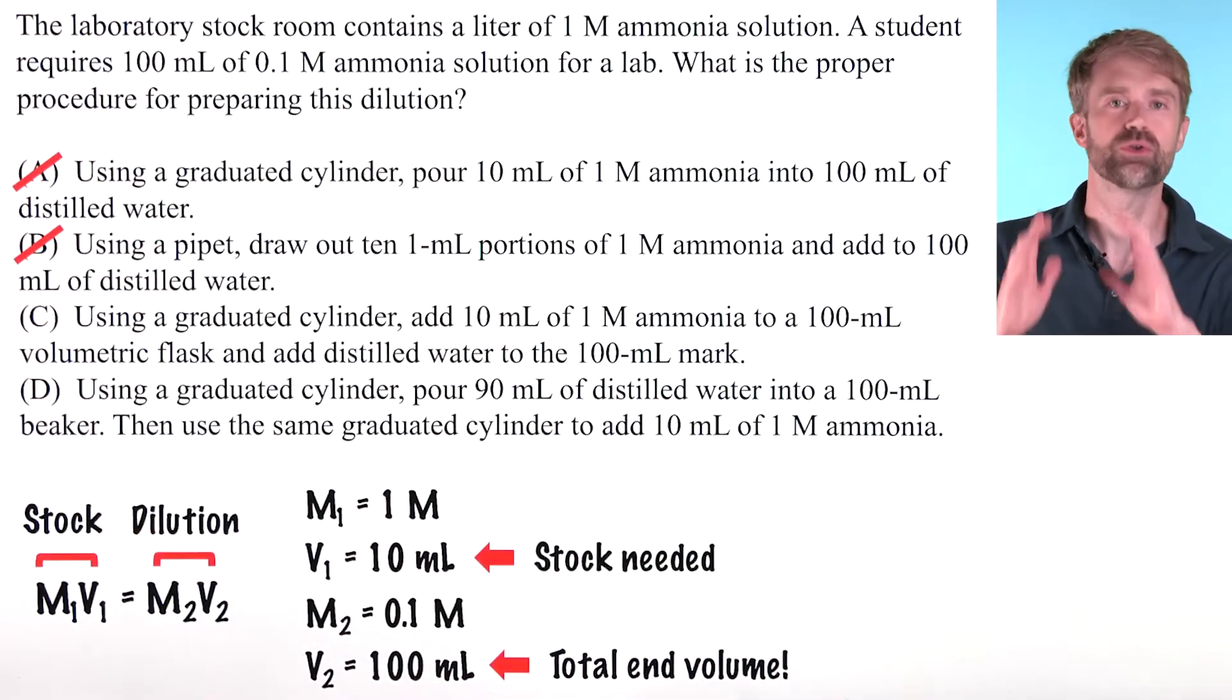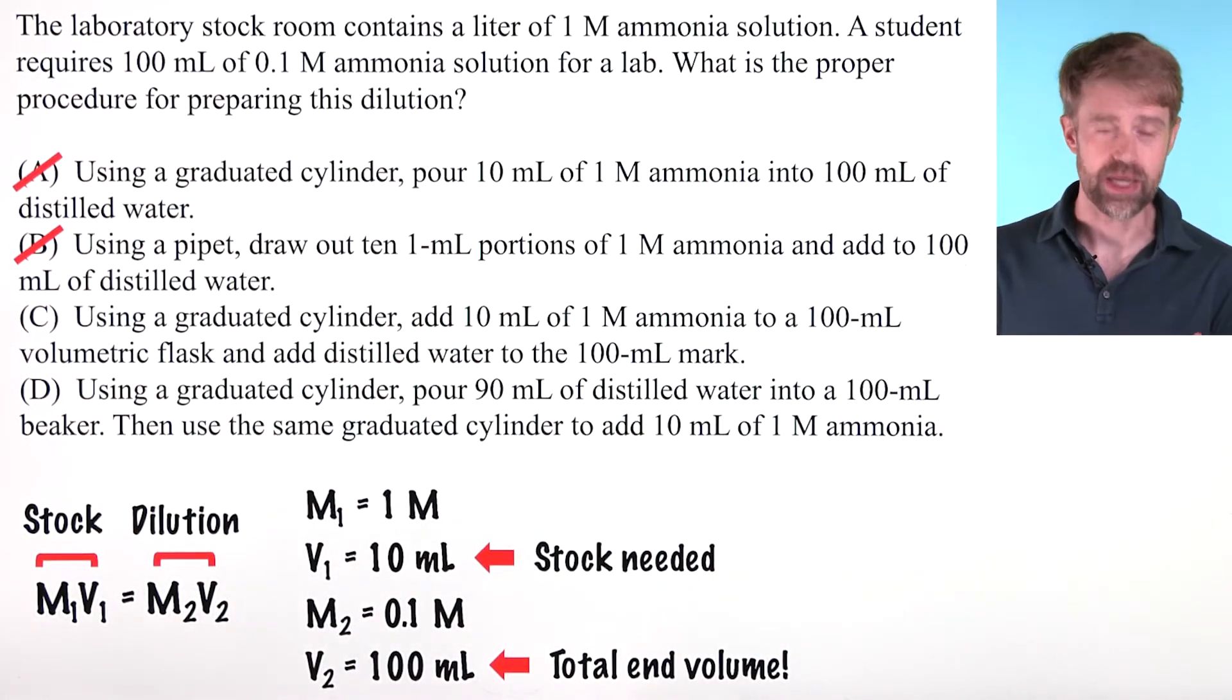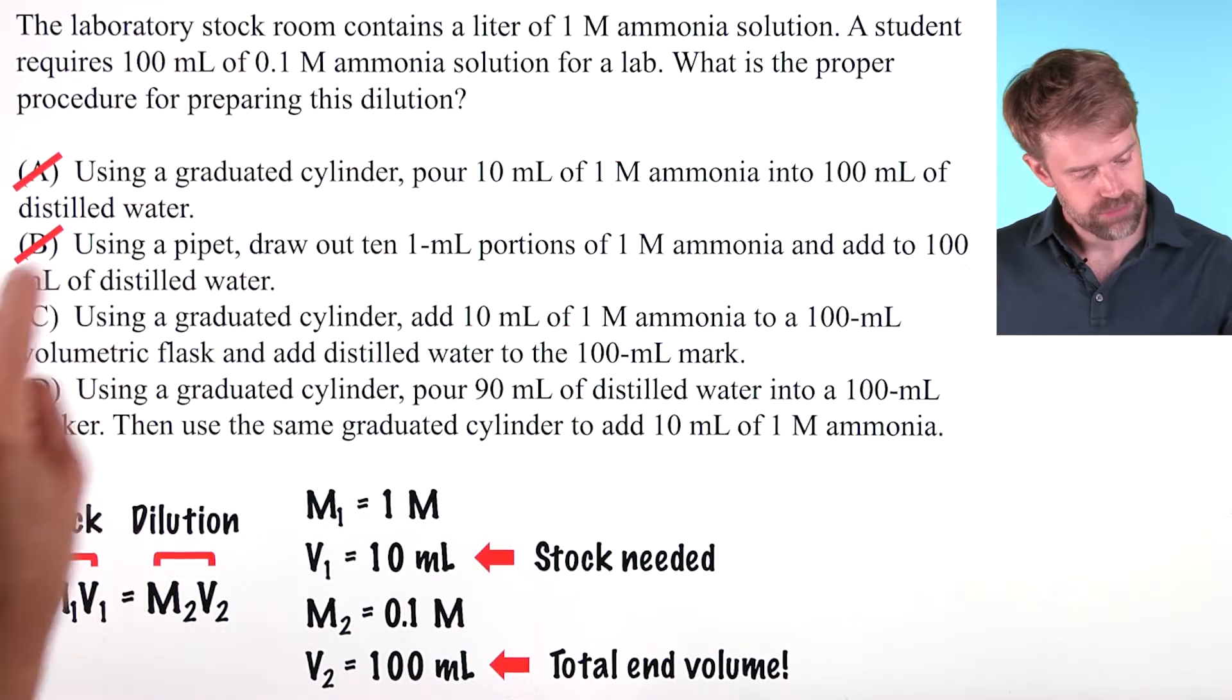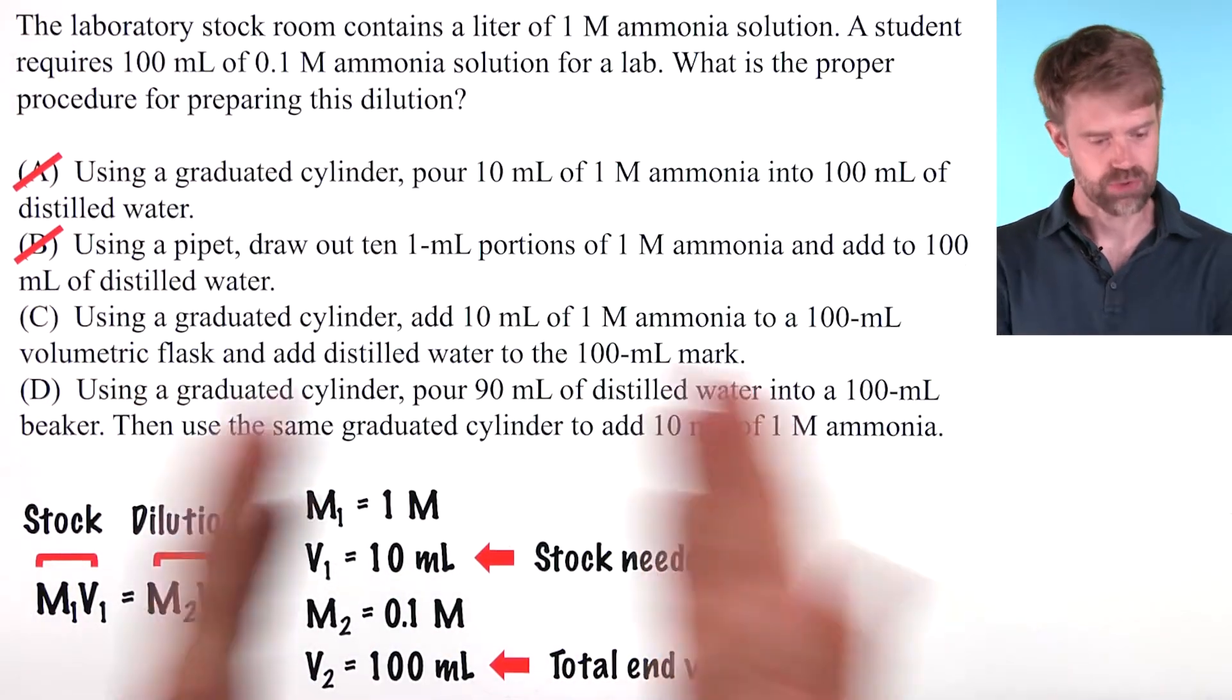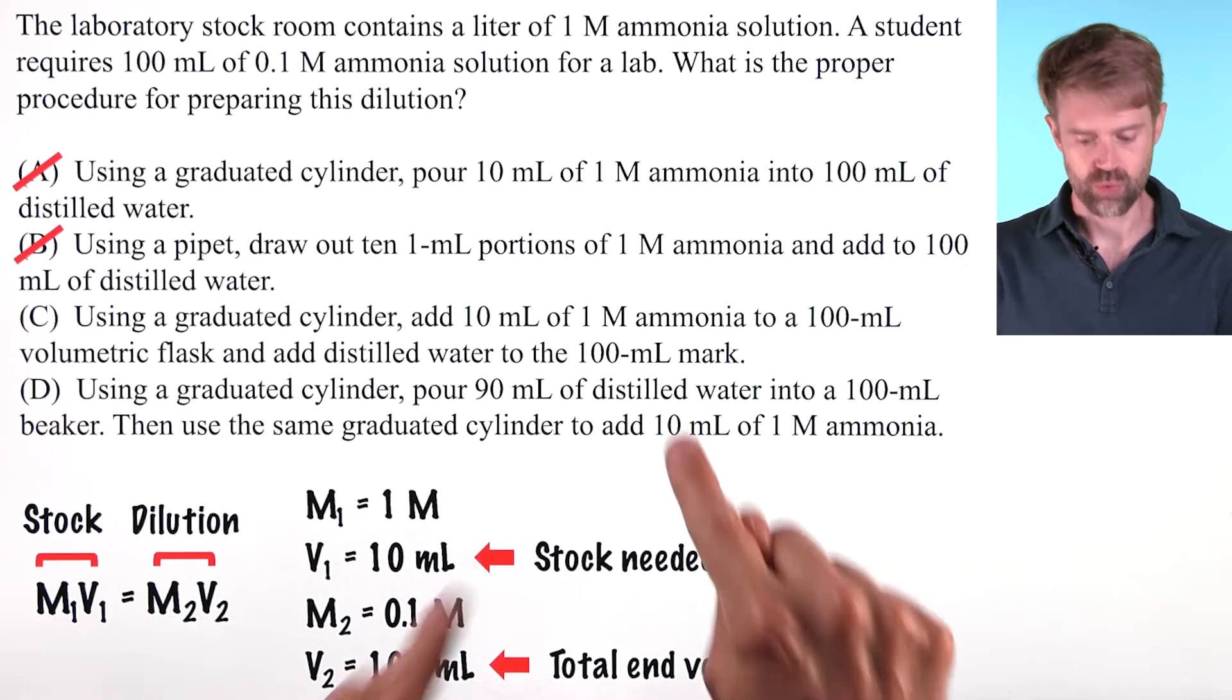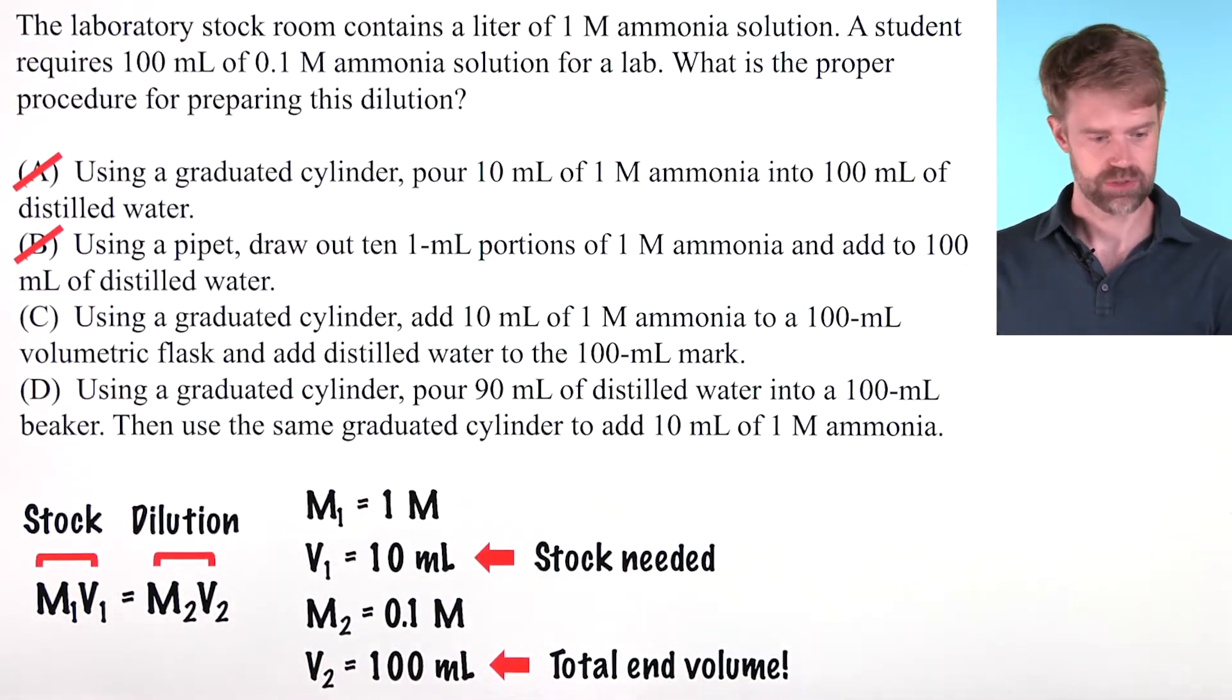So you can cross those off. We've narrowed down half the answer choices already, just being aware of this very common mistake. That leaves us with these two answer choices that have the correct math. Both of these, if you read them through, dilute 10 milliliters of stock solution with distilled water to reach a final volume of 100 milliliters.